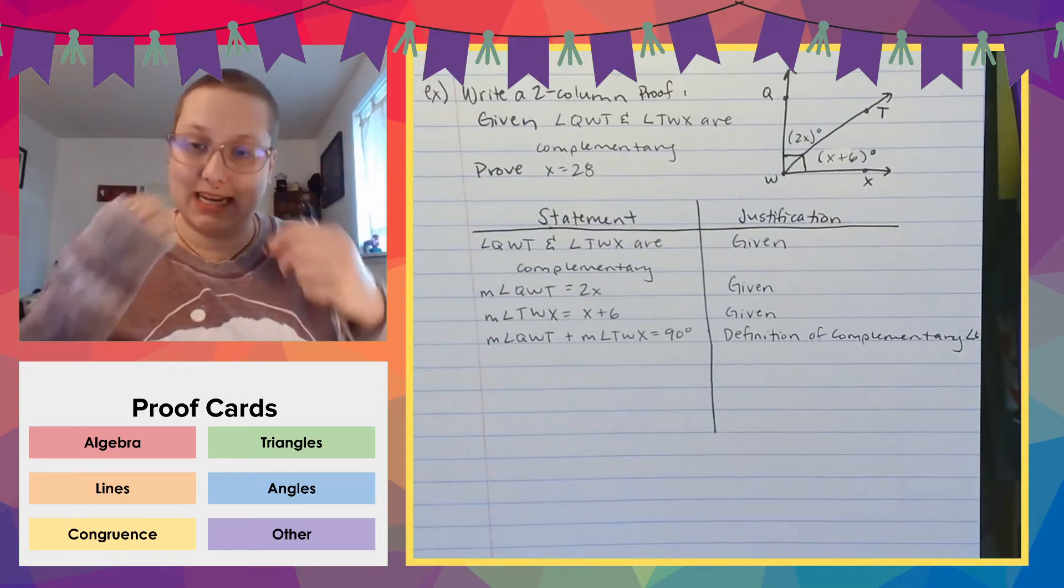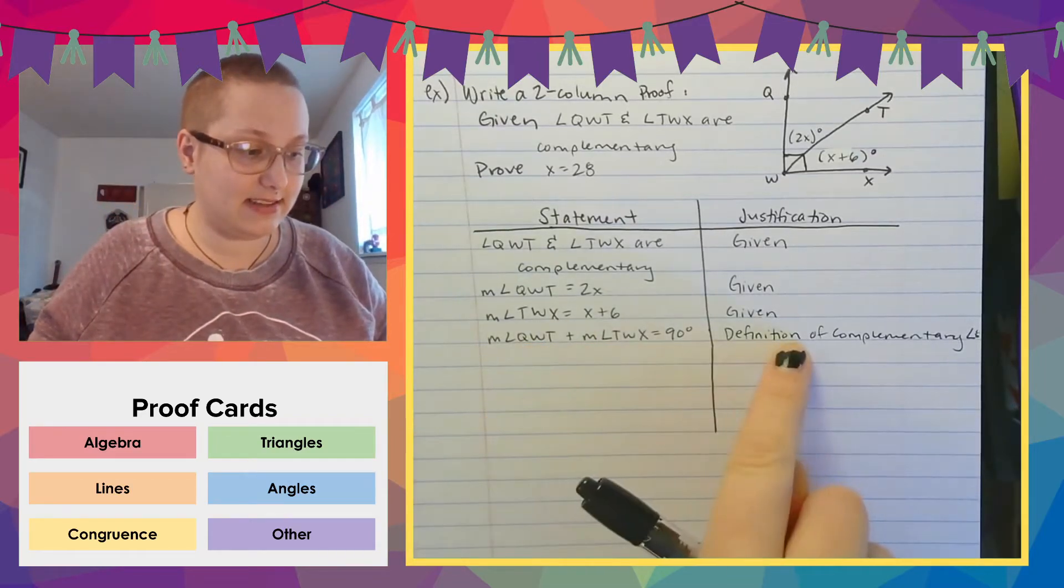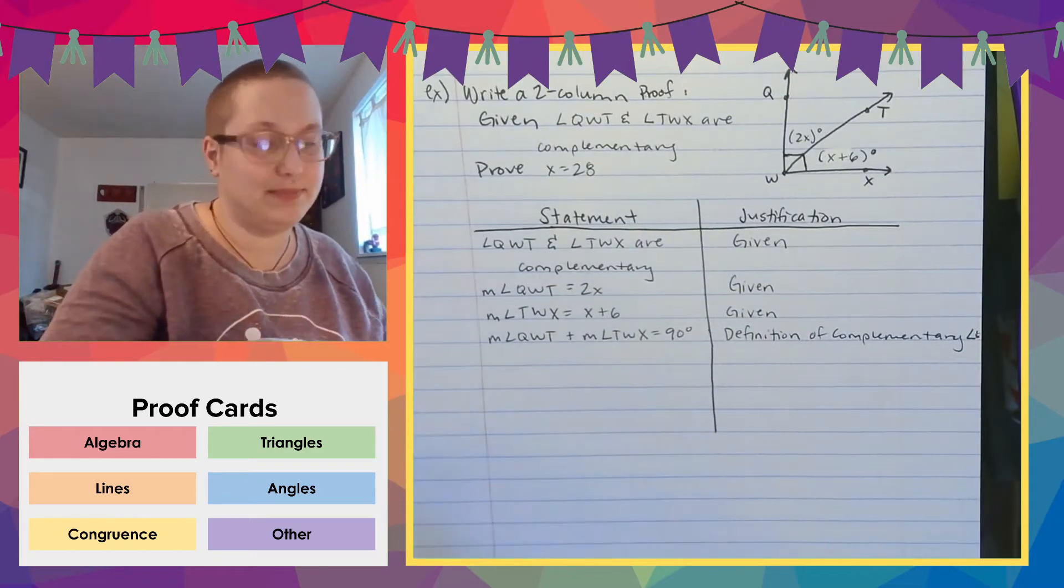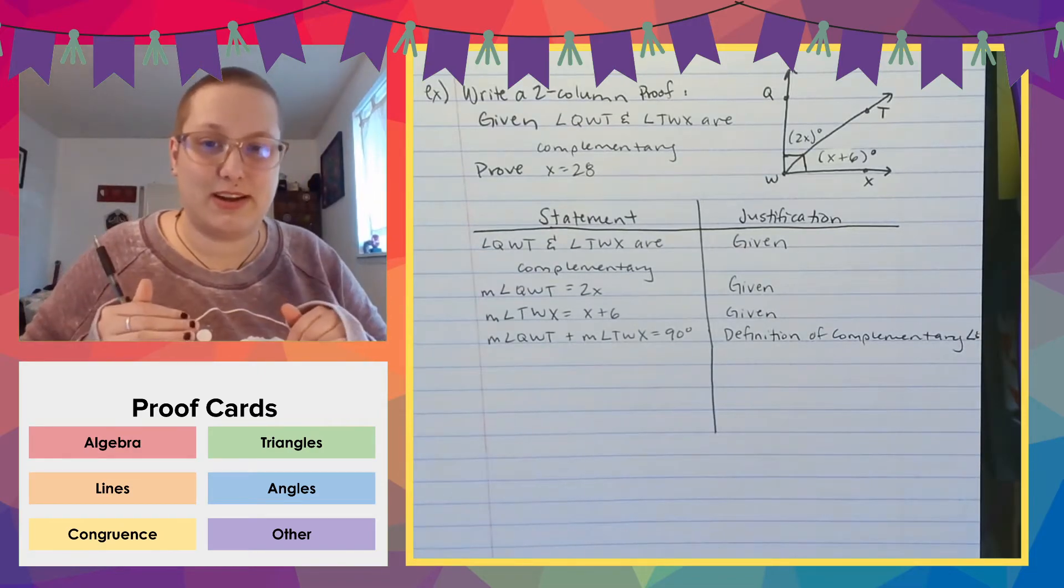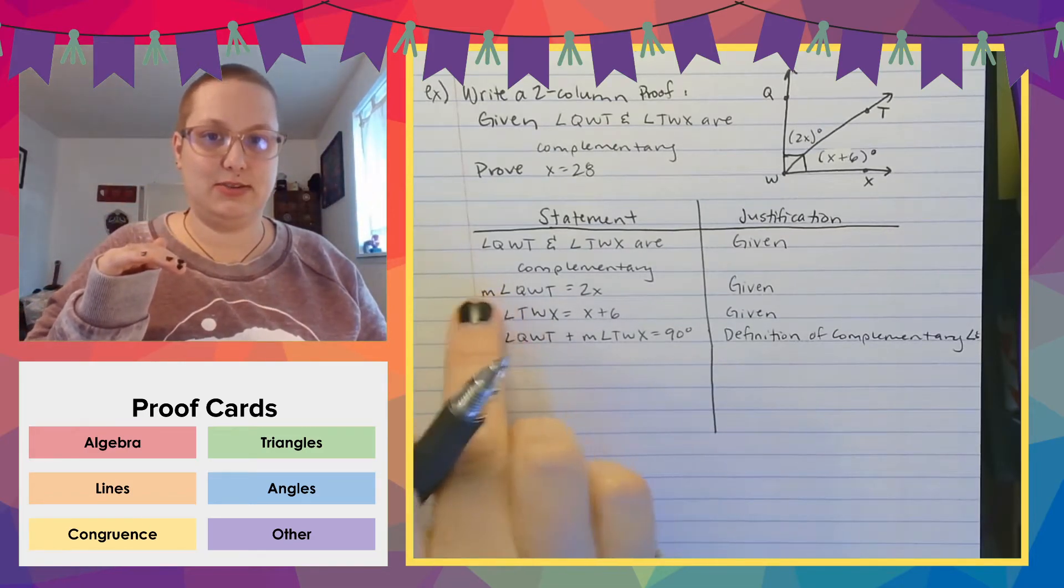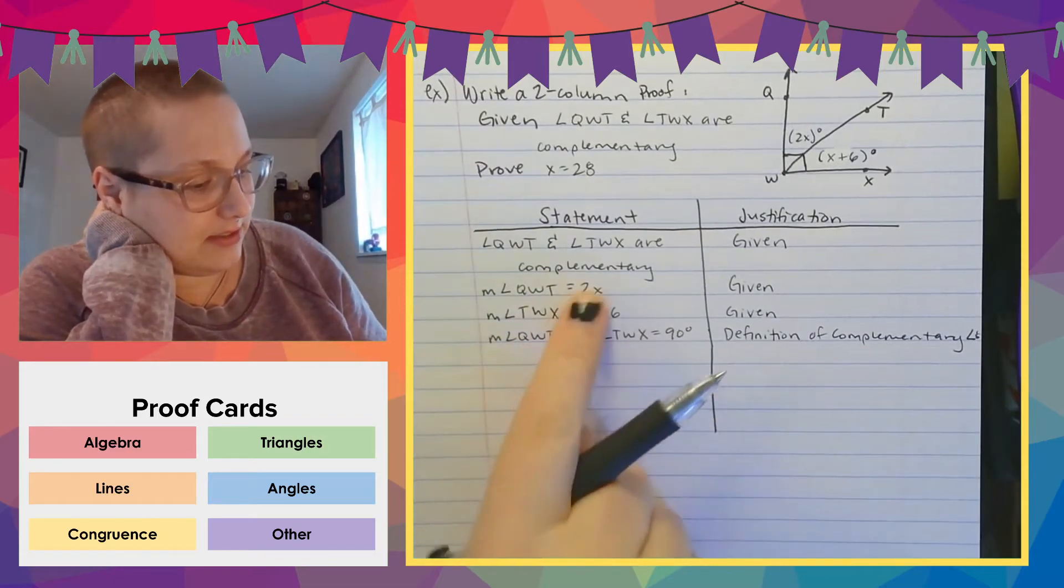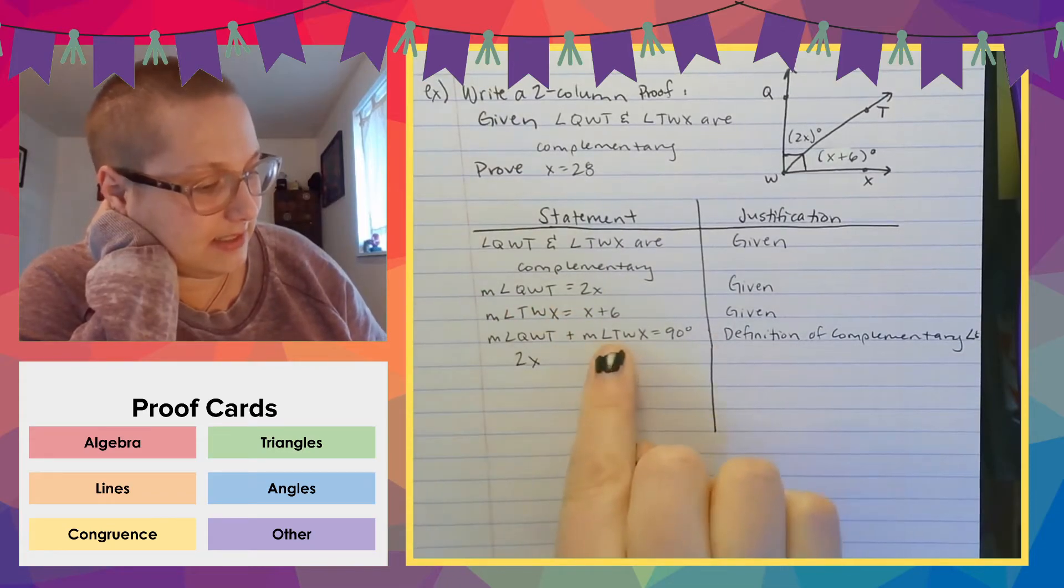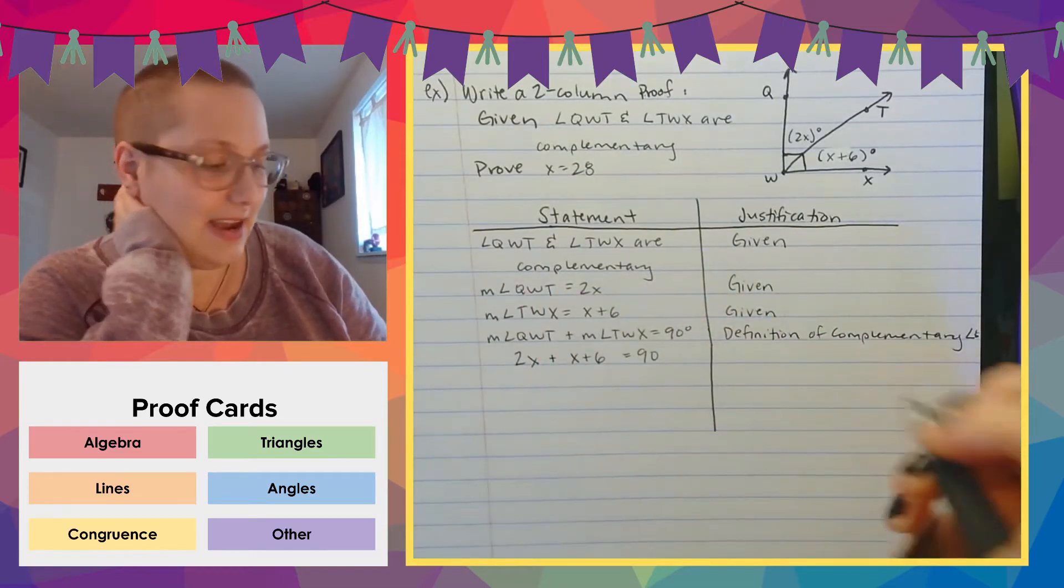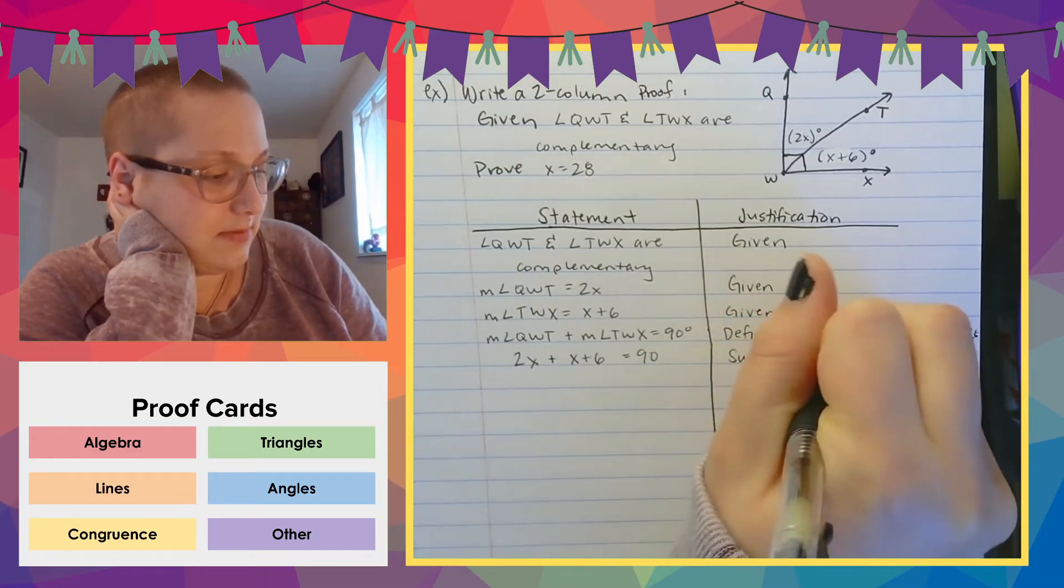Okay. So next we're going to plug in what we know. So by the way, as I said before, I could have said that this could go here. Like I could have had this line right here be in between these two perfectly fine. You can't mix around a lot of things, but you have to follow it logically step-by-step, but these two or these two, and this one could be flipped around. It's fine. Okay. So QWT is 2X. So I can write 2X here and TWX is X plus 6. And that equals 90. What did I just do? I substituted. So we say this is substitution.